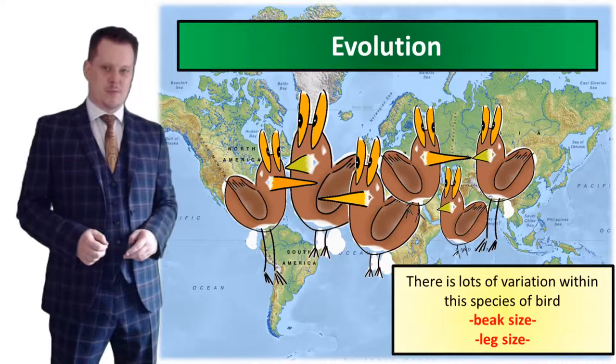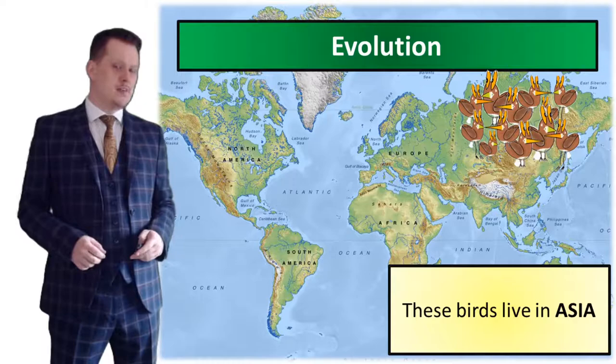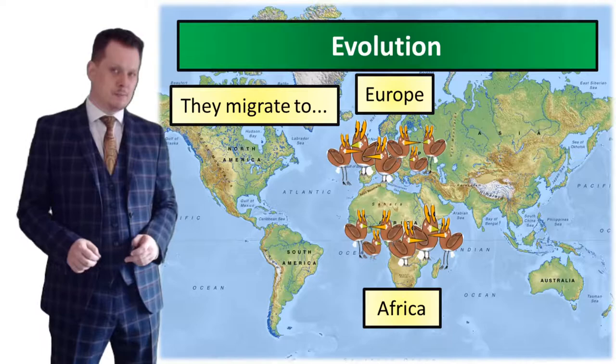Some birds have small beaks, some have big beaks, some have small legs and some have larger legs. This population of birds lives in Asia, and these birds migrate — half of them migrate to Africa and half migrate to Europe. The conditions in both of these continents are very different.